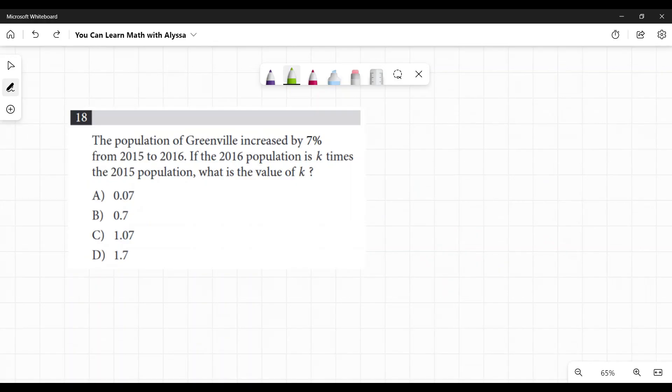The population of Greenville increased by 7% from 2015 to 2016. If the 2016 population is K times the 2015 population, what is the value of K?